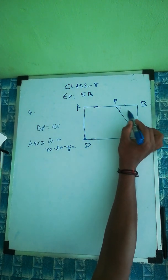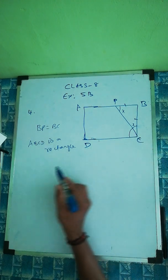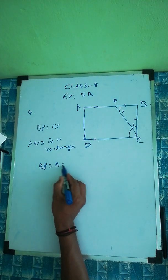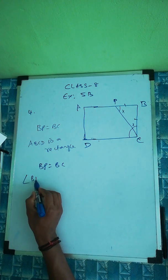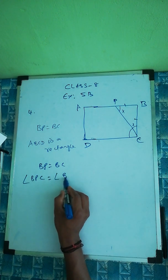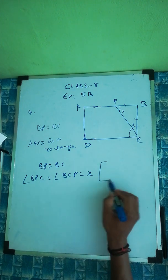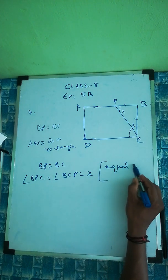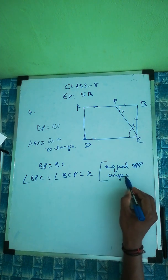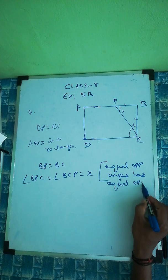Since BP equal to BC, these two sides are equal, which means the opposite angles are equal. So angle BPC equal to angle BCP — let's call both of them X. Equal opposite angles correspond to equal opposite sides.